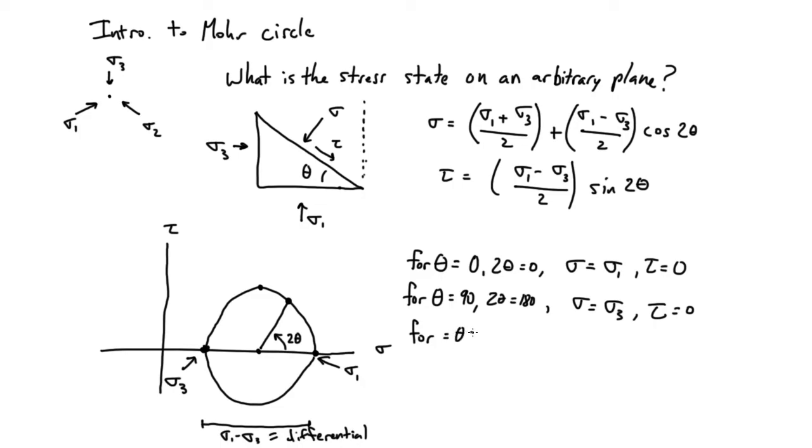So that would be theta equals 45, which is the same as two theta equals 90. So this angle here in that case would be a 90 degree angle, which is the same in real space as theta here being 45 degrees.